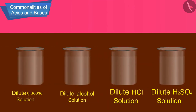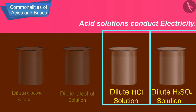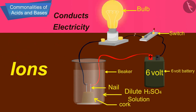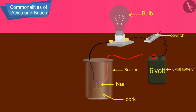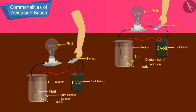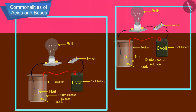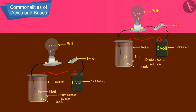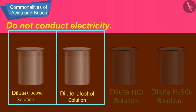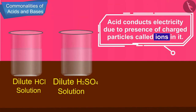Glowing of the bulb indicates that there is a flow of electric current through the solution. The electric current is carried through the acidic solution by ions. Now, repeat the experiment with glucose and alcohol solutions — the bulb does not glow in both these cases. This shows that glucose and alcohol solutions do not conduct electricity.